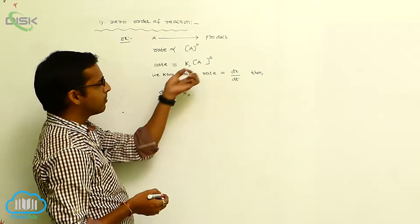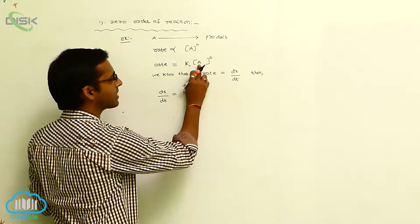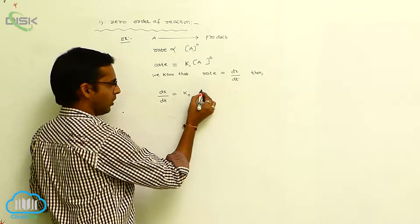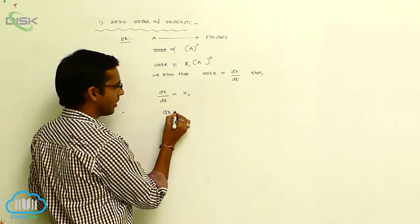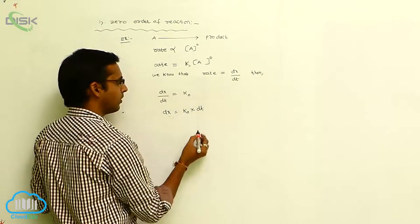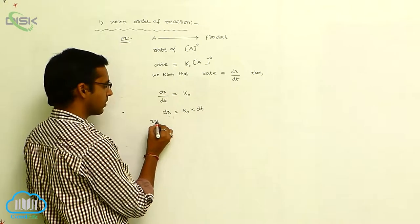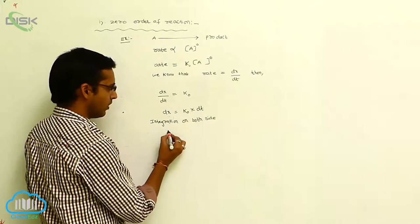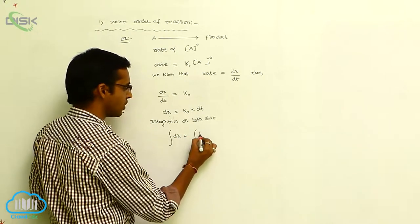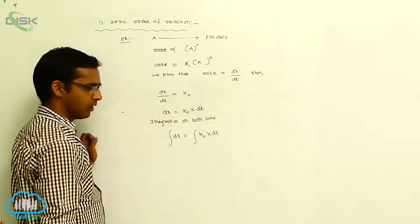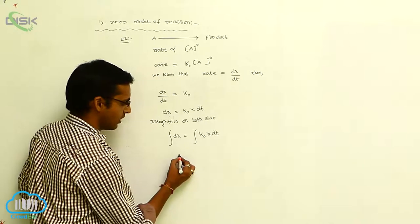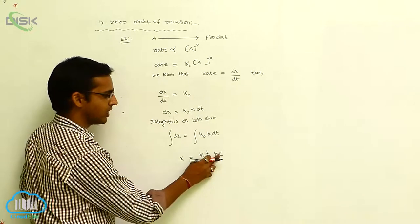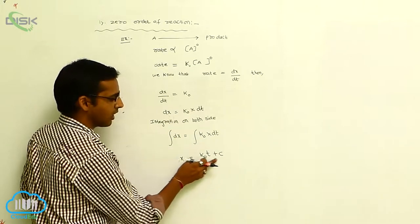Now, here A₀ is the initial concentration. After time T, it produces X amount of product. So this concentration is Kx. While rearranging: dx equals K₀ into dt. So the above equation, integrating on both sides: integration of dx equals integration of K₀ into dt. Integration of dx equals X, so X equals K₀t plus C. This is equation 1.